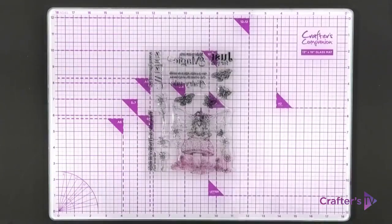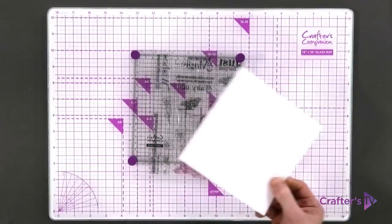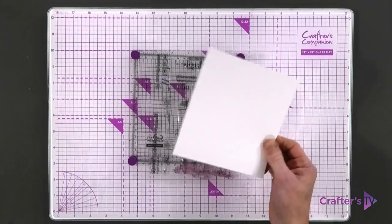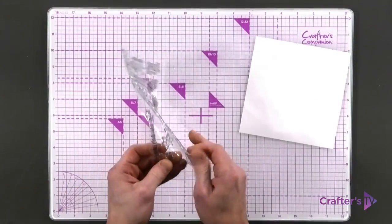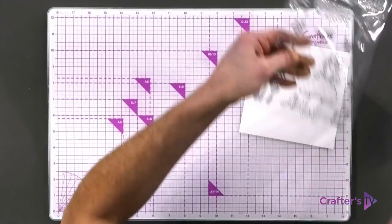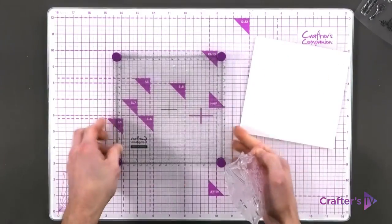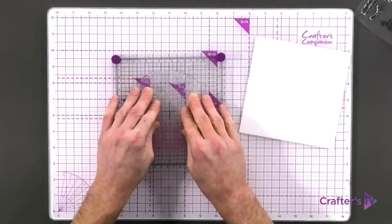I'm going to take my stamping mat and stamping platform. I've got some of our watercolor card here. I'll just move that to the side, pull the stamp off, and pop it right into the center of our stamping platform.